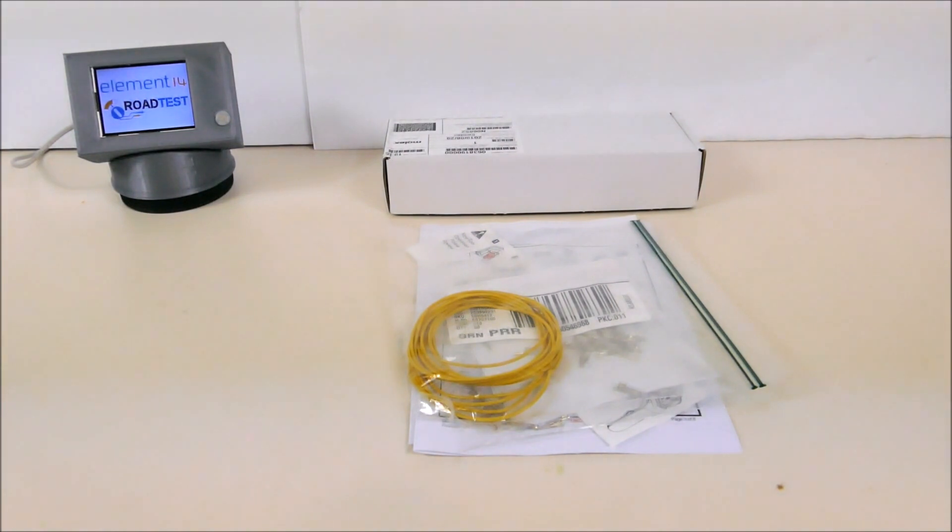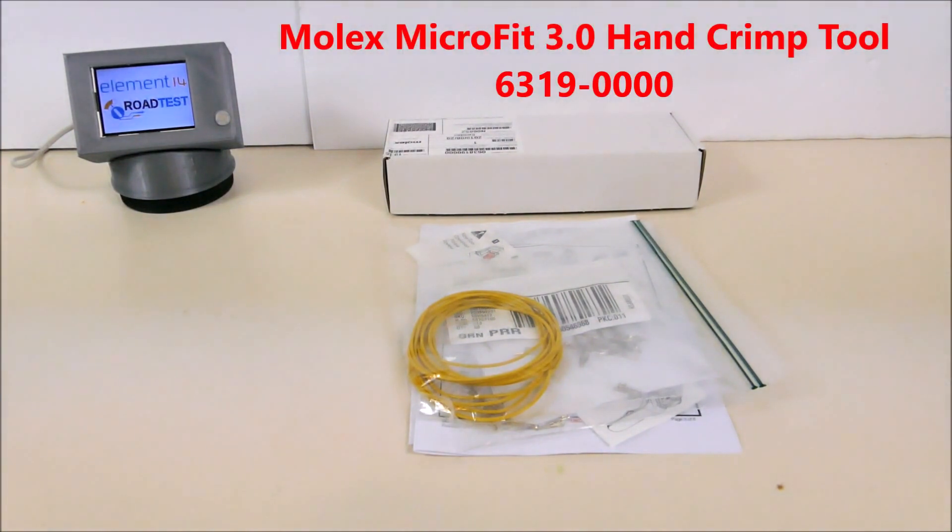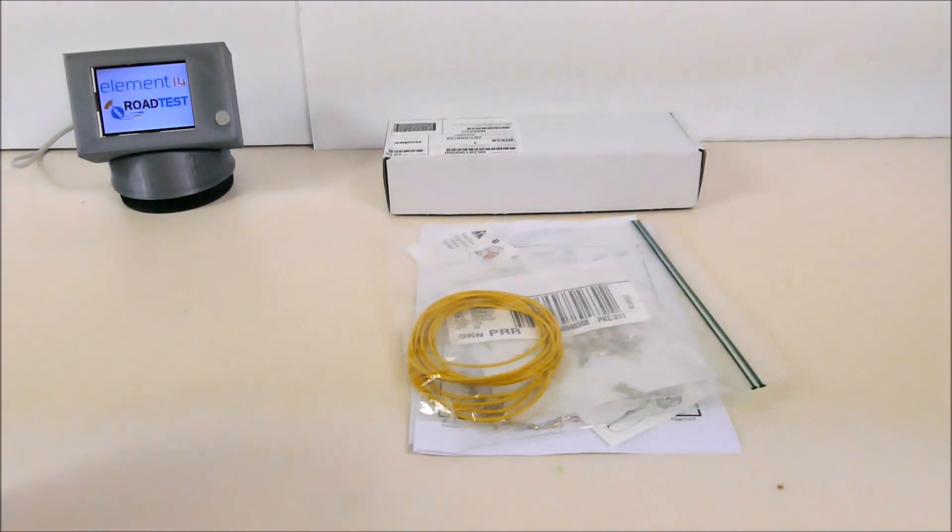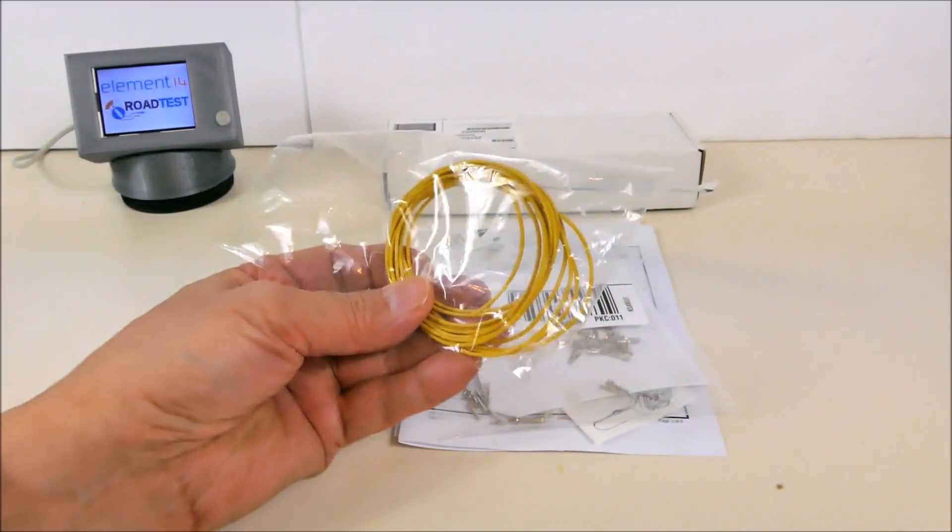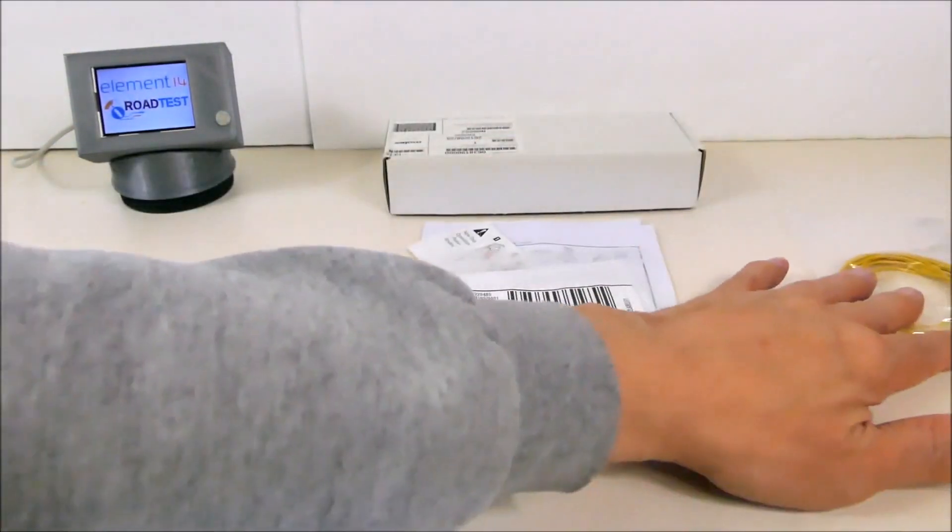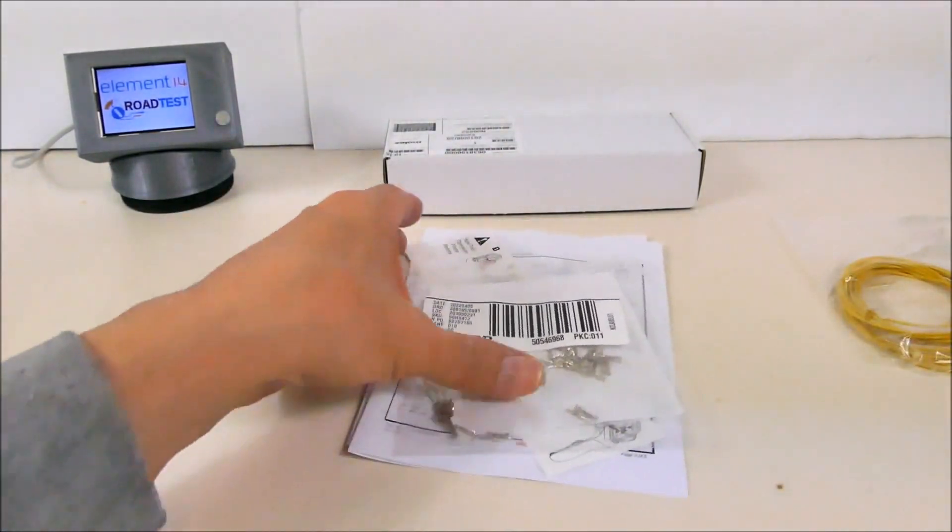Okay, this is a road test of a Molex crimper. I'm going to run through what was included in the road test kit from Element 14. It included some wire to crimp the connectors onto, and also included were some connectors which fit this crimper.